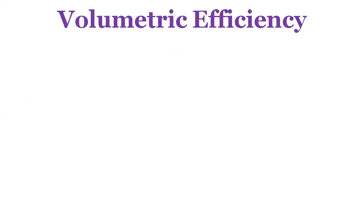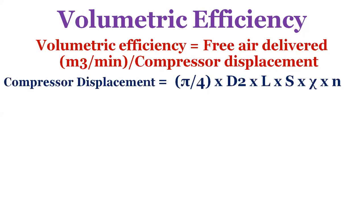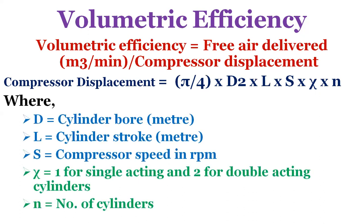Volumetric efficiency is defined as free air delivered (m³/min) divided by compressor displacement. Compressor displacement = (π/4) × D² × L × S × N, where D is cylinder bore (m), L is cylinder stroke (m), S is compressor speed (RPM), and N is the number of cylinders — using 1 for single acting and 2 for double acting. The most practical metric for comparing compressor efficiencies is specific power consumption: kilowatt per volume flow rate.